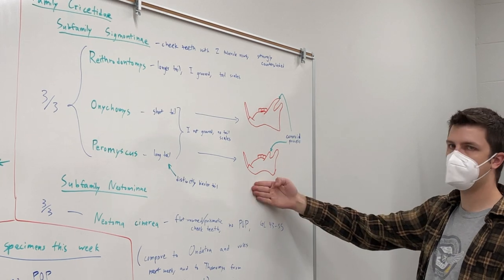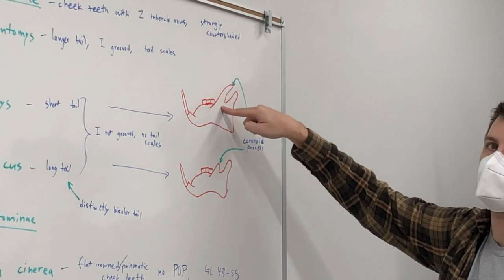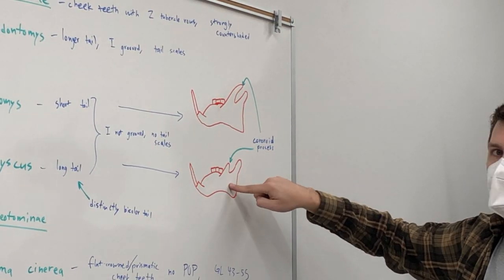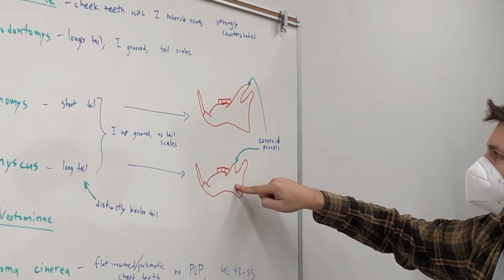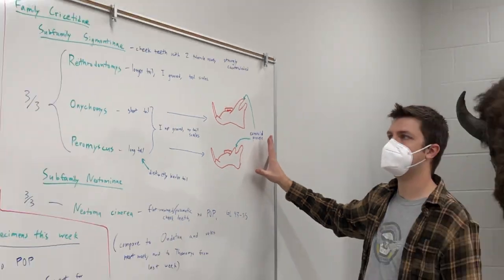So if this is a side view of the jaw, this bit sticking up right there is going to be a lot, lot longer on the grasshopper mouse than on the deer mouse. And that's how you can tell these skulls apart.